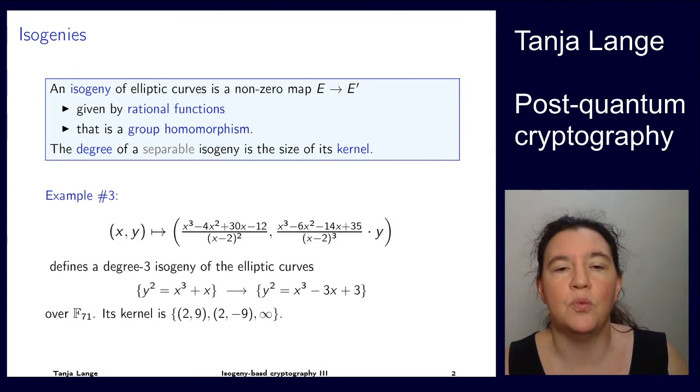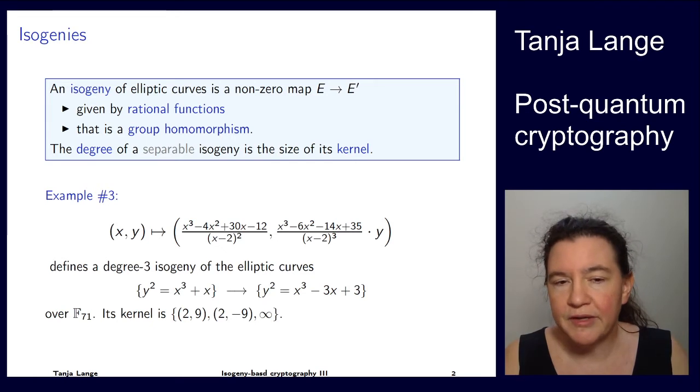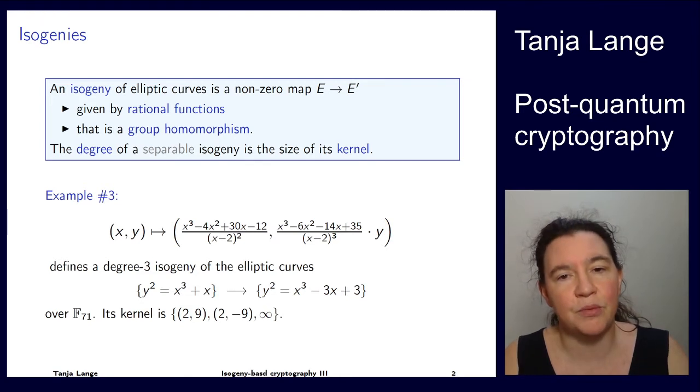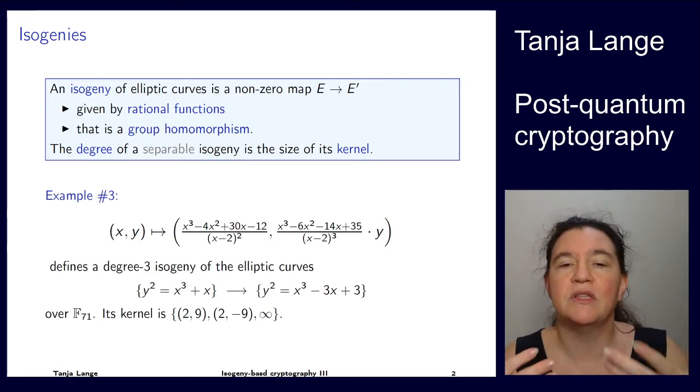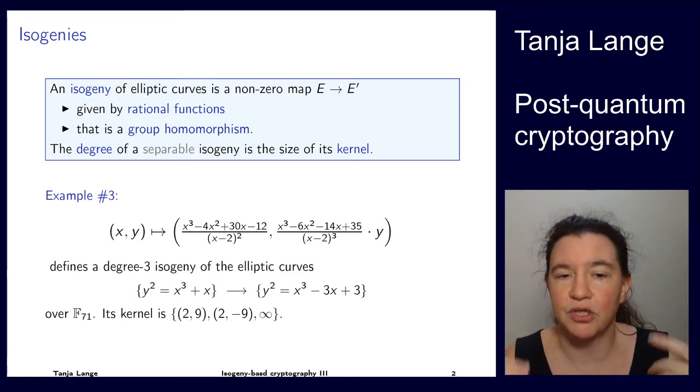So the point 2 comma 9 and the point 2 comma minus 9 are non-trivial elements of the kernel. And of course, there's also the point of infinity. So there are three elements in this kernel. And so this is a degree-3 isogeny. So with the multiplication-by-3 map, we would get a degree-9 isogeny. But with this more complicated map, we can actually get a degree-3 isogeny, so without the squaring.